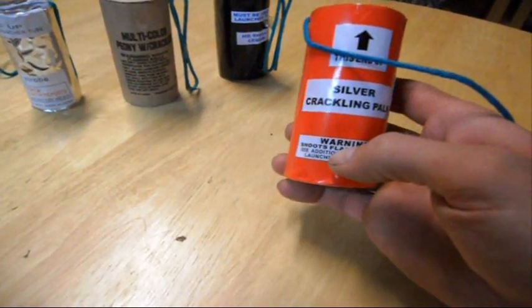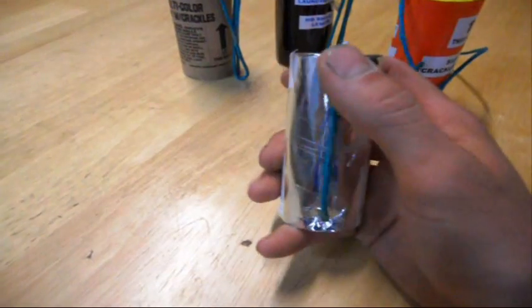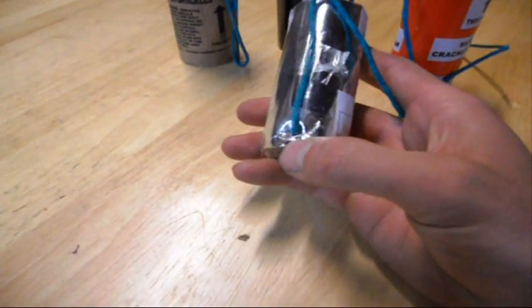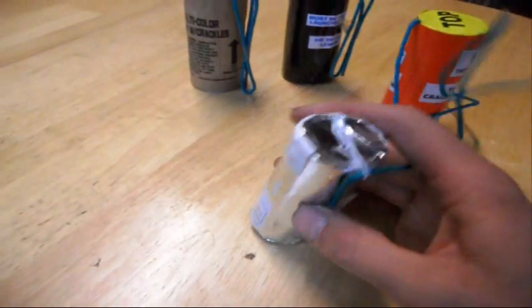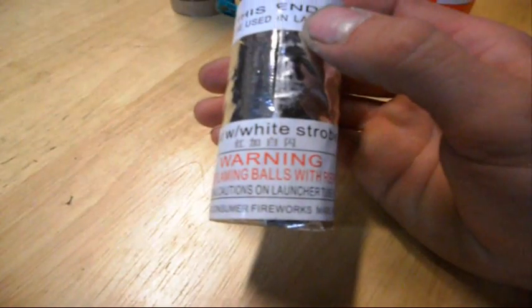This canister shell right here, the fuse doesn't go into the paper. It literally is outside and you can see where it enters the shell, and it has that string on top. A white string—white strobe.